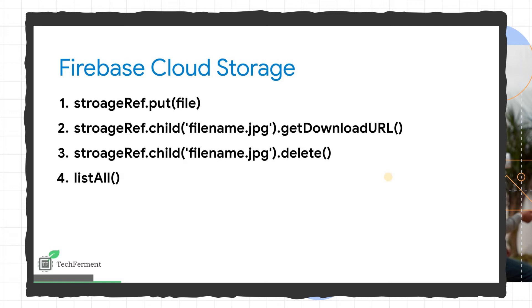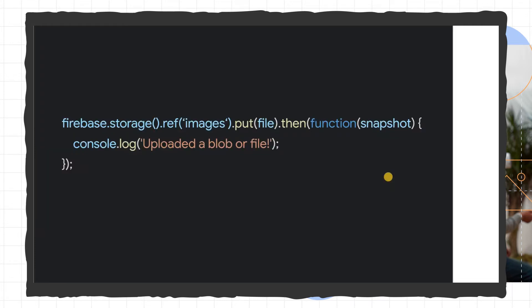There are some methods you can use. First, you need to define a storage reference. Then you can call the put method for uploading a file. If you want to get a downloadable URL, you need to define a reference and call the getDownloadURL function. Similarly, if you want to delete a file, you can call the delete method. To list all uploaded files, you can call the listAll method. A storage reference is just like a directory.